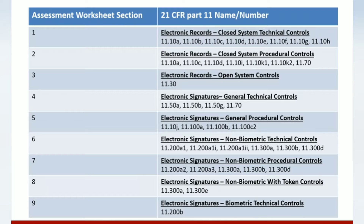The questionnaire document has nine specific sections. On the left you see the sections numbered one to nine; on the right you see the specific parts of 21 CFR Part 11 that they reference. Sections one, two, and three are for electronic records, whether for a closed system or an open system. Sections four, five, six, seven, eight, and nine have to do with electronic signatures, covering technical controls and procedural controls.